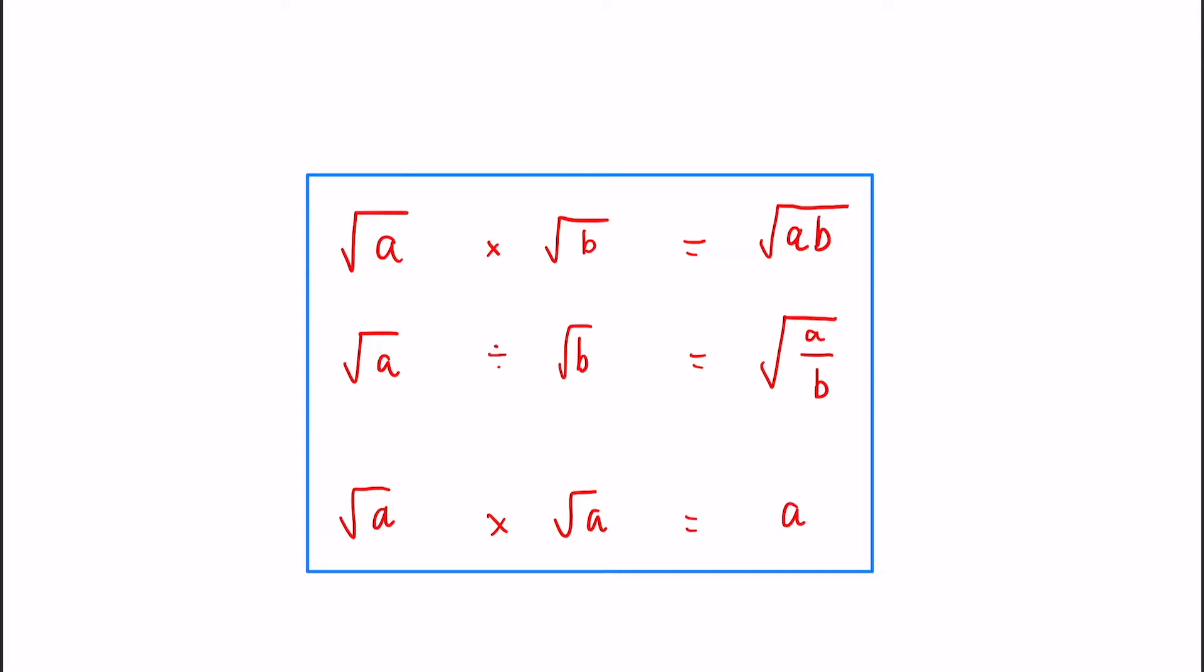So when we multiply two square roots together, we simply just multiply the numbers inside the roots. Similar for dividing, whenever we've got the division with the two roots, we just divide the two numbers and put it under a root.